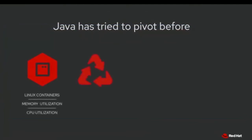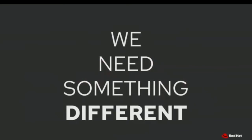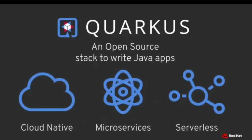Java has tried to improve itself to fit in Linux container technology — in terms of memory optimization and CPU optimization. There are new garbage collection algorithms like Shenandoah and ZGC, and there are new process compilers like the Dalvik for Android environments. There are lots of huge efforts to enhance Java technology to fit into new IT trends like immutable infrastructure, Linux containers, microservices, and public cloud — but it's still not good enough. That's why we need something different with Java.